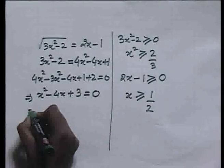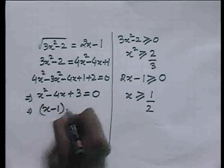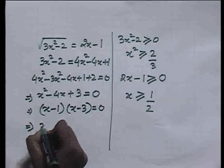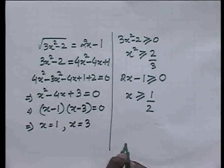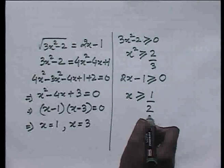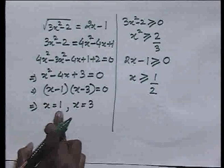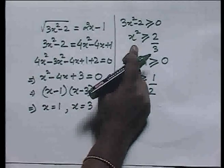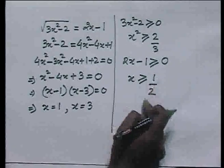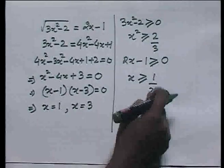This equation is of quadratic form and we know how to solve it. The factors will be (x - 1)(x - 3) = 0, and hence the solutions are x = 1 and x = 3. But do these values satisfy our conditions x² ≥ 2/3 and x ≥ 1/2? When x = 1, we find 1² ≥ 2/3 and 1 ≥ 1/2, so x = 1 satisfies both conditions.